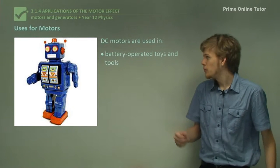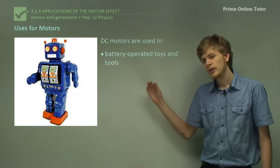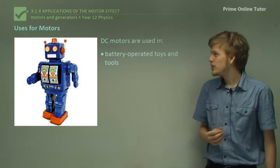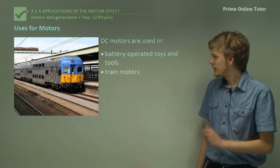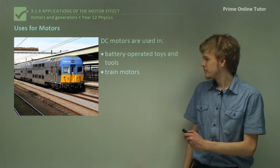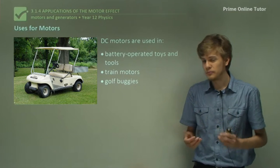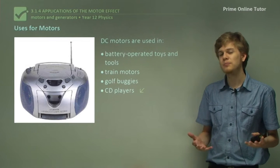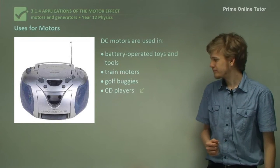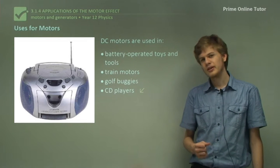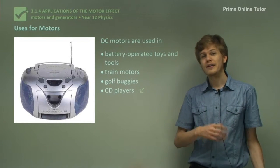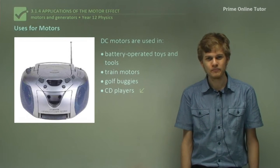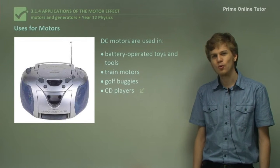So what do we use them for? We can use them in battery-operated toys and tools, because batteries create a DC current, and if we have a DC current we can use a DC motor. We can use them for train motors, electrically-powered vehicles like golf buggies, and for things like CD players and other low-powered devices. So that's the end of the theory. Now we know a little bit about DC motors and how they manage to turn continuously by the use of a split-ring commutator. Let's go on to some questions to check if you've all got that.